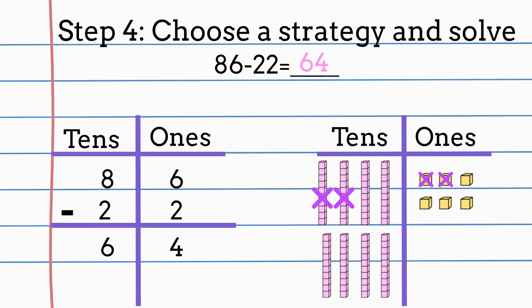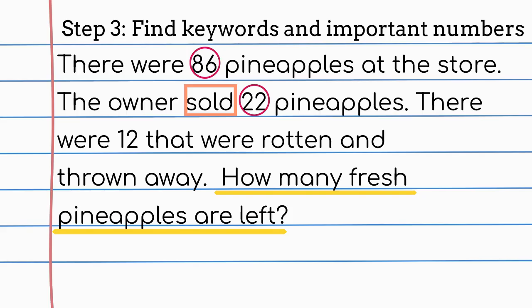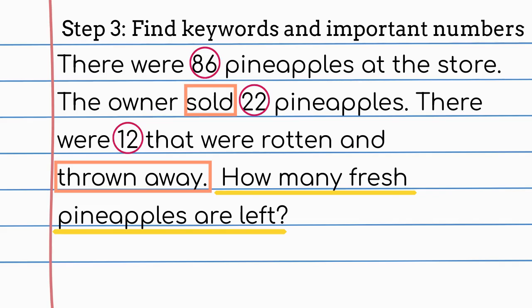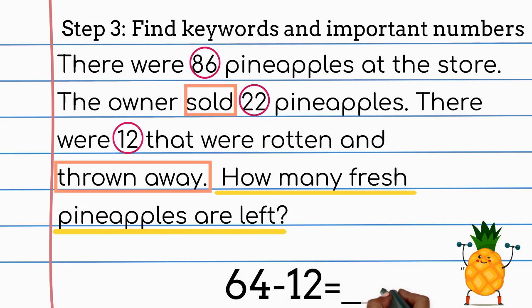But we are not finished yet. We still have another part of our word problem that we need to solve. Let's go back and find those keywords and important numbers so we can solve the second part. It says that there were 12 pineapples that were rotten and thrown away. 12 and thrown away are important. Because if the owner is throwing the pineapples away, that means they are gone. So thrown away tells us we will be subtracting. The first part of our equation is going to be the amount of pineapples at the store right now. 64 minus 12 will be our next equation, because the store has 64 pineapples right now and 12 were thrown away. Once we solve this, we will know how many fresh pineapples are left at the store.